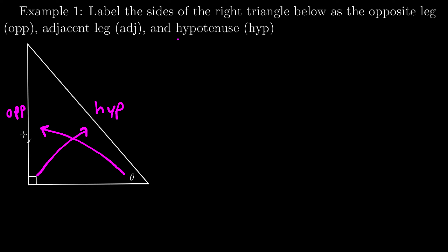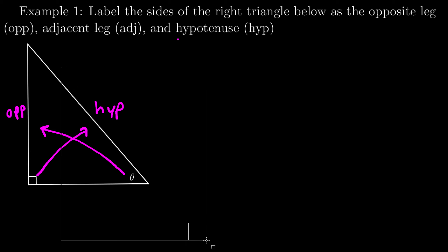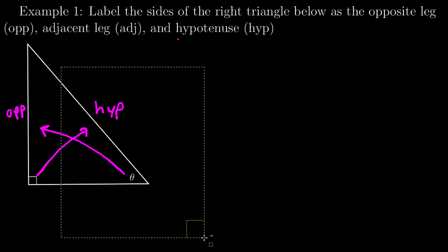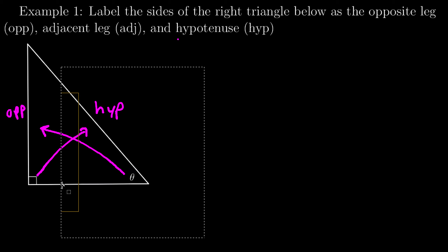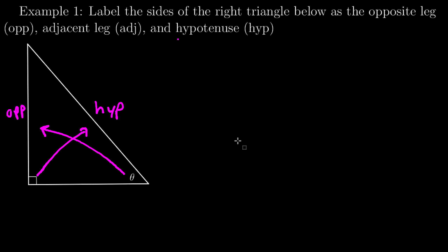If you have trouble seeing it that way, you can always cover up the angle we're dealing with, and the side that is left whole will be the opposite. Now the side that is left over is the adjacent leg — but this side here is already the hypotenuse, so the adjacent leg is right here.